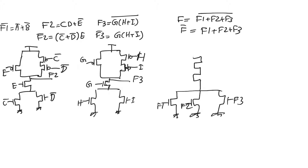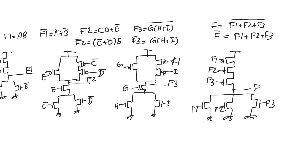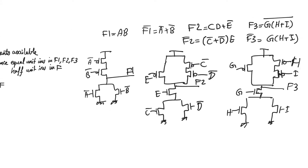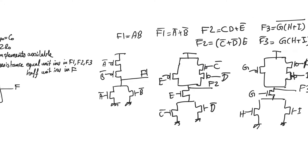In the pull-up network we have a series connection of three PMOS transistors, with f1, f2, and f3, giving us f at the output. Now let's do the sizing for f1. The worst case pull-down resistance will be either through transistor a-bar or b-bar, so each will be sized at W/L equals one.